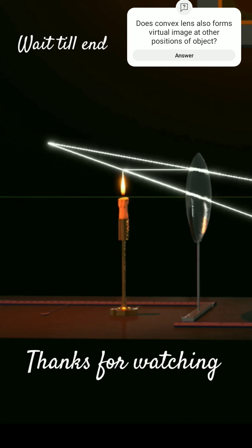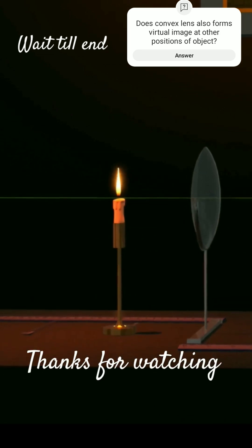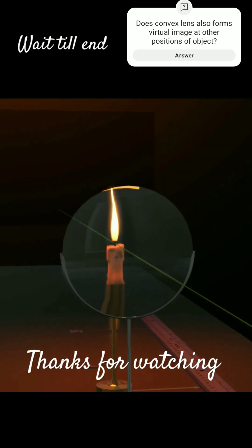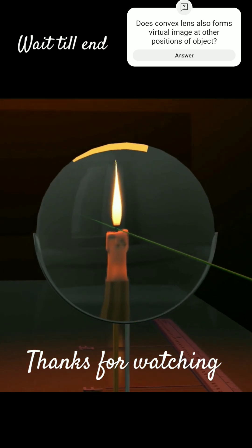The virtual image is magnified, erect or upright and is formed on the same side as the object. Since virtual image cannot be formed on the screen, we can see the virtual image through the convex lens from the opposite side of the object.